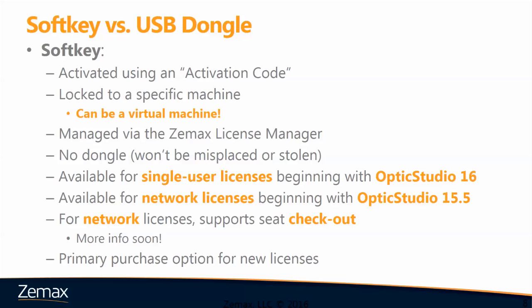The biggest benefits of soft key licenses — and why we really encourage their use — are that they can be used with a virtual machine, and for network licenses, they support seat checkout. When it comes to virtual machines, this is especially important because hard key licenses with virtual machines can have difficulty getting the virtual machine to recognize hardware present, especially for cloud computing purposes. With a soft key license, the soft key can be activated directly on a virtual machine, and we ensure that the virtual machine will have visibility of the license.